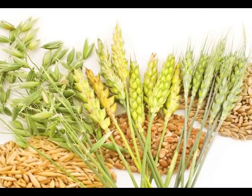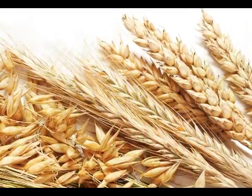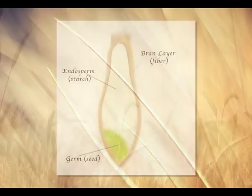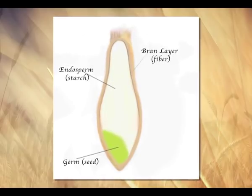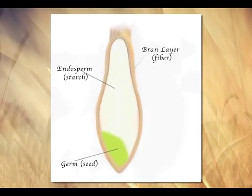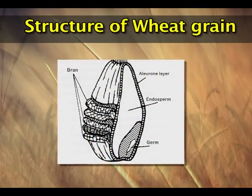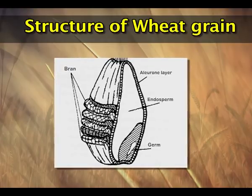The structure of cereal grains is similar, but for convenience let us look at the structure of the wheat grain. If we look at the parts of the cereal grain, it is broadly divided into three parts: the outer bran or pericarp, the endosperm, and the germ. Let us first talk about the bran or pericarp, which is the outermost layer of the grain and is composed of several layers.